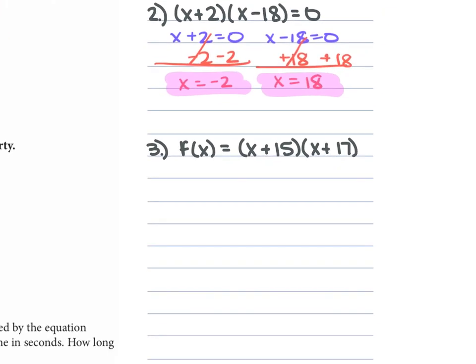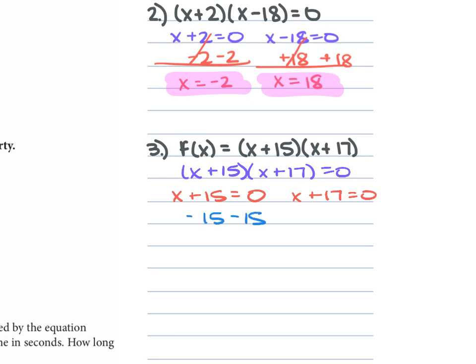For problem 3, we're given f(x) = (x + 15)(x + 17), which is the same as saying (x + 15)(x + 17) = 0. So we set x + 15 = 0 and x + 17 = 0. Subtracting 15 from each side gives x = −15, and subtracting 17 from each side gives x = −17.